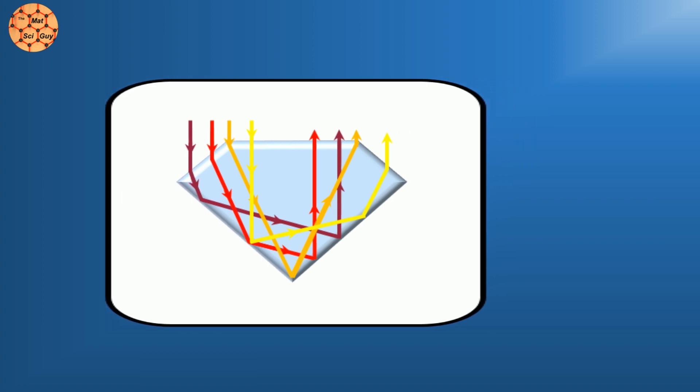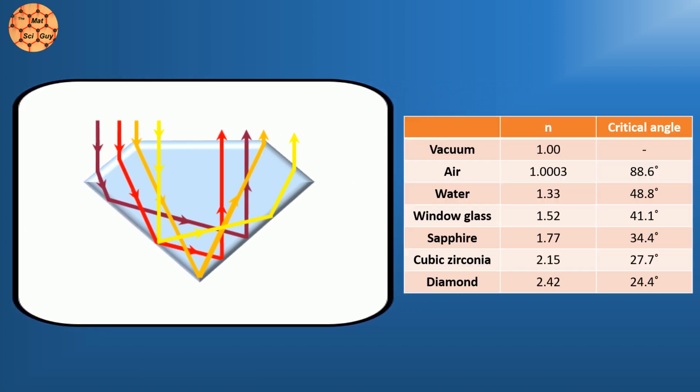Cubic zirconia's similarity to diamond comes from its similarly high refractive index. Most transparent liquids or solids are between 1 and 2. Diamond is a very high 2.42,